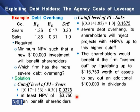As for the cutoff level of profitability index of SEC, it is 0.1675. This represents a severe debt overhang problem because its shareholders will reject all projects with even positive NPVs up to this higher cutoff rate. Shareholders can benefit only if the firm liquidates its assets up to $116,750 in order to pay an additional $100,000 in dividends to its stockholders.